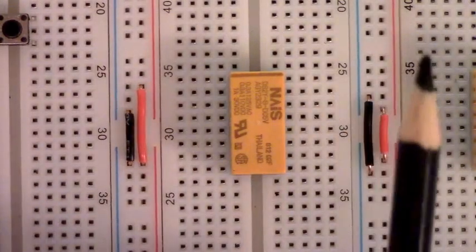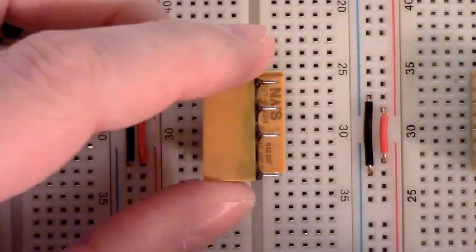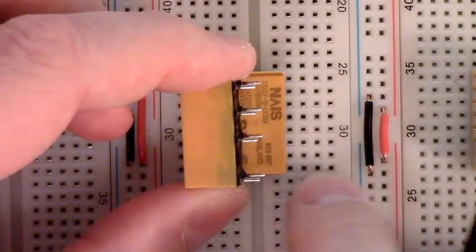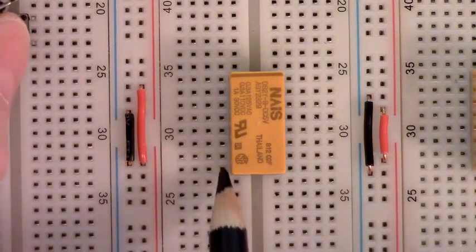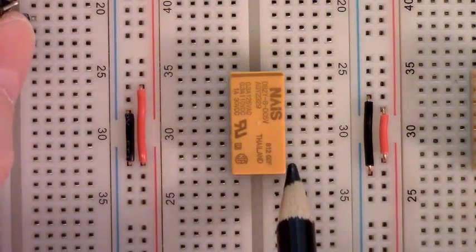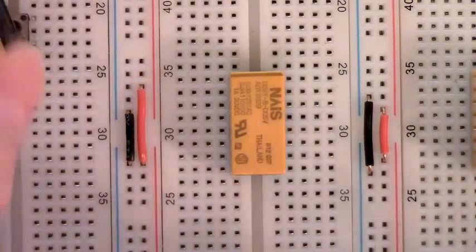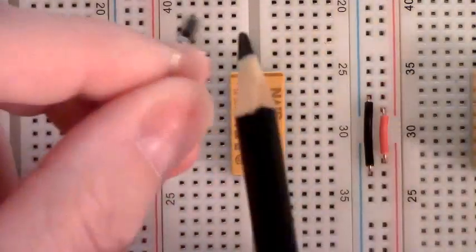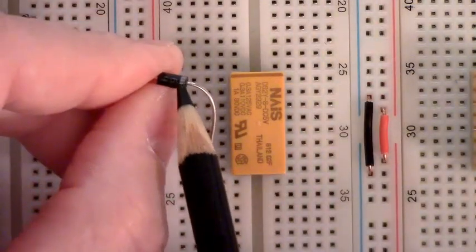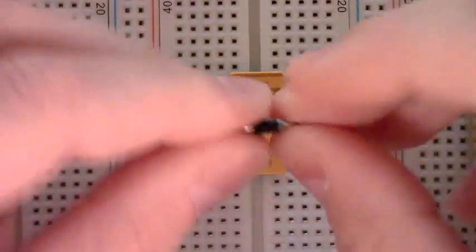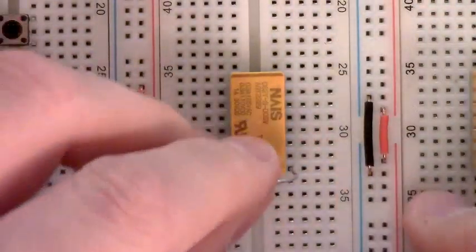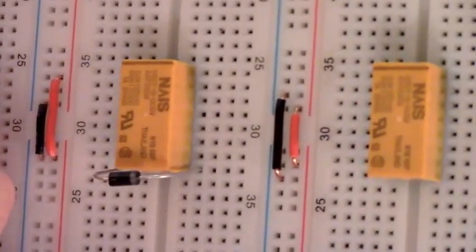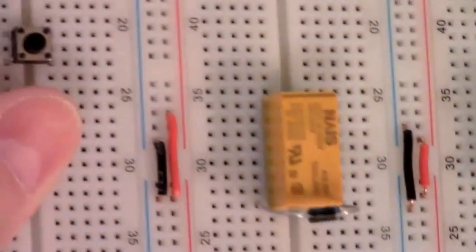Here's our double pole double throw relay and the pinout is like this. The coil pins are in this row of the breadboard and the first thing I'll do is add a diode across that coil to protect the NPN transistors we'll add beneath it to switch the coil. We'll take a diode with its cathode, in this case with the diodes I'm using it's marked by a gray band and add it to the circuit encircling the coil. That's how it looks.